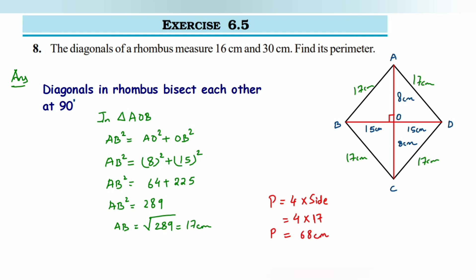That's it, we have found the perimeter of the rhombus. I hope you have understood this. If you have any questions or doubts you can leave a comment below. Thank you so much for watching.